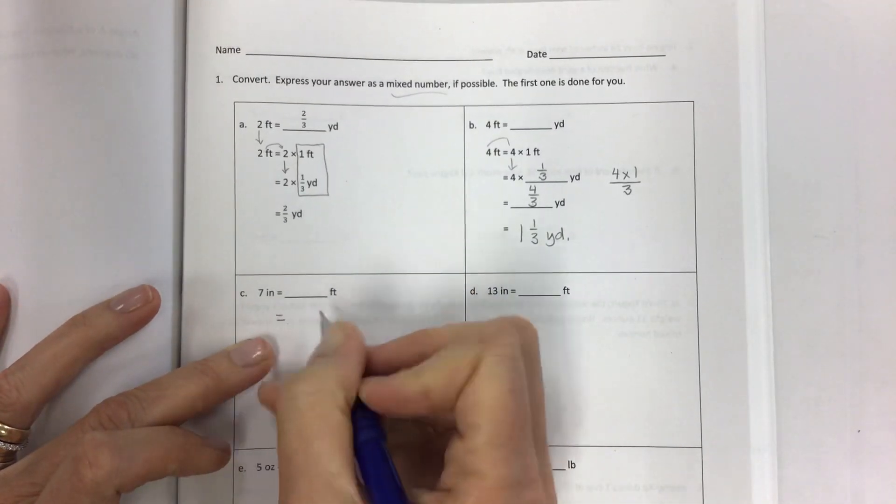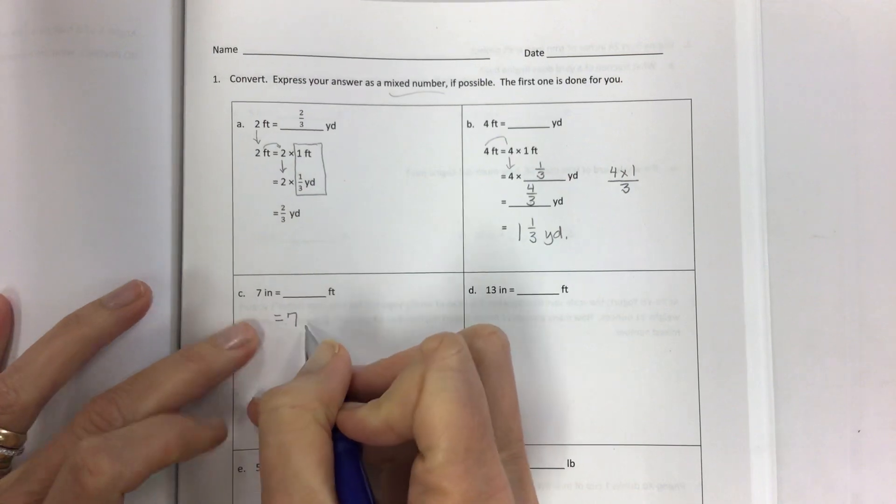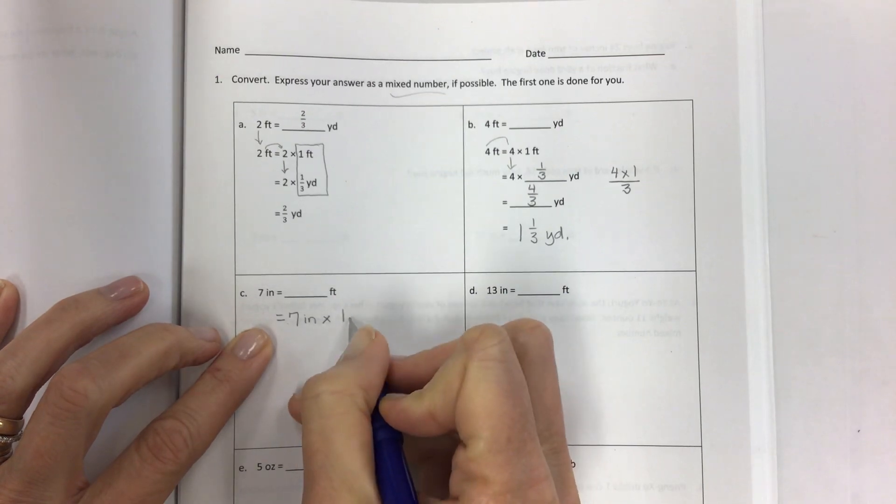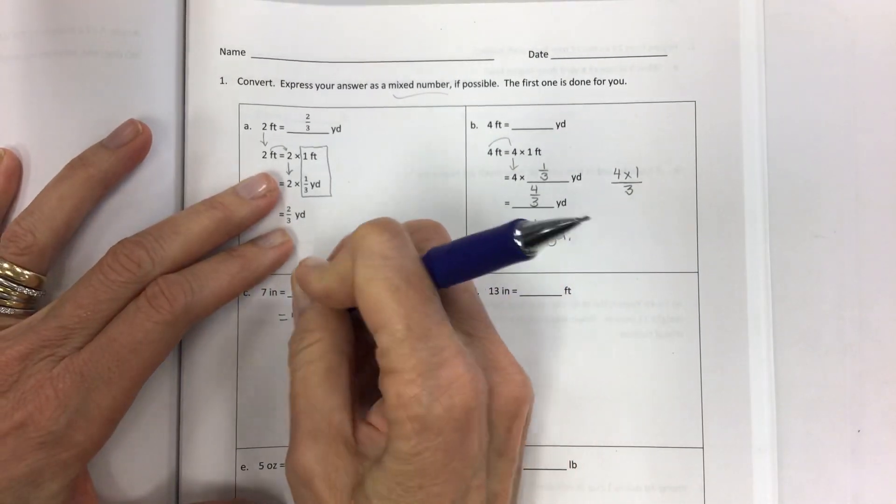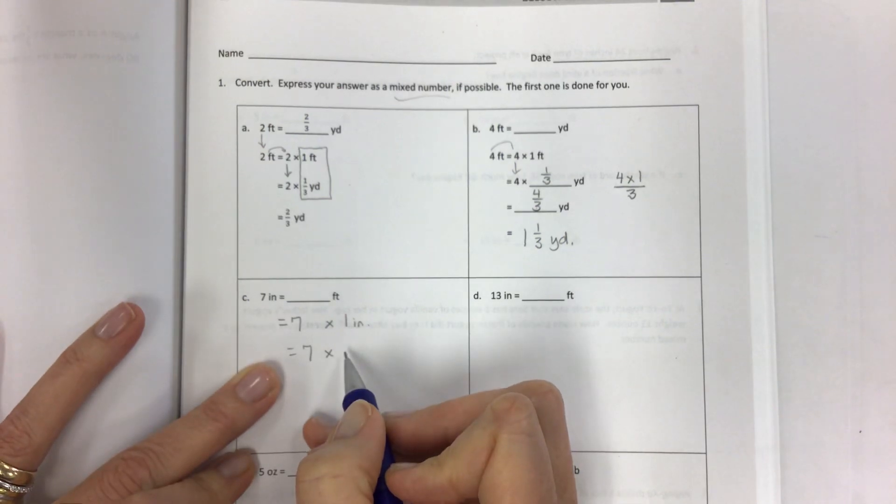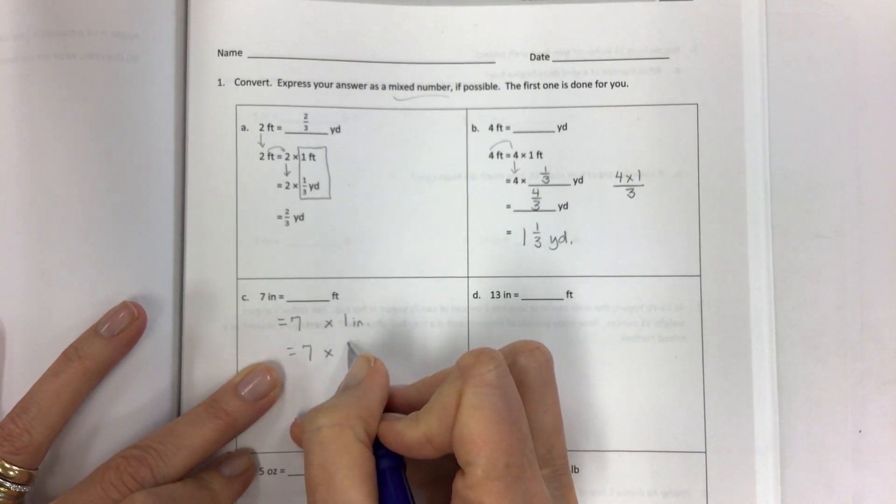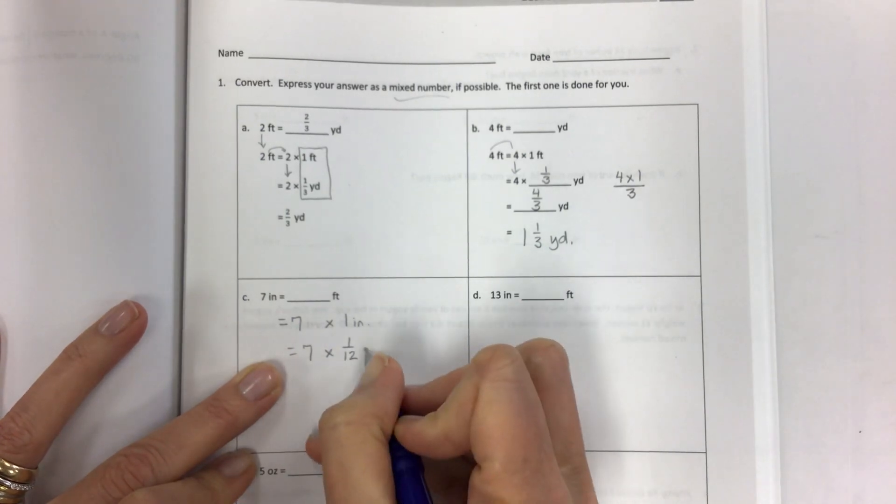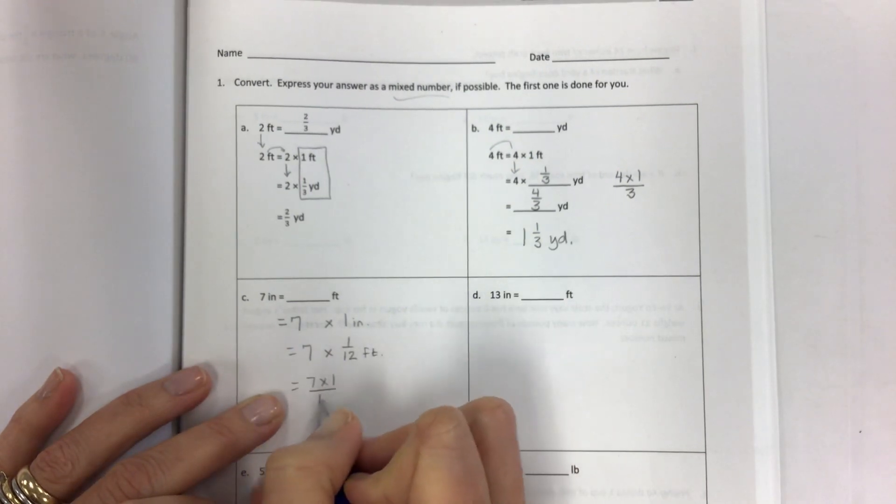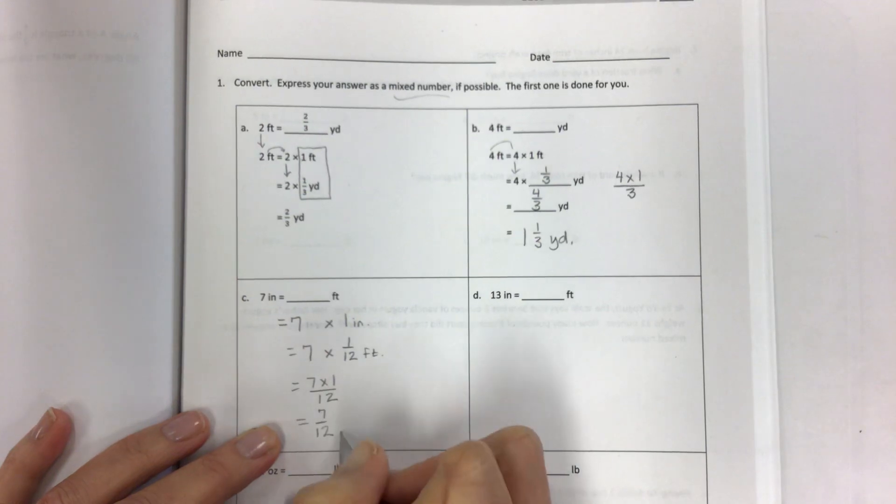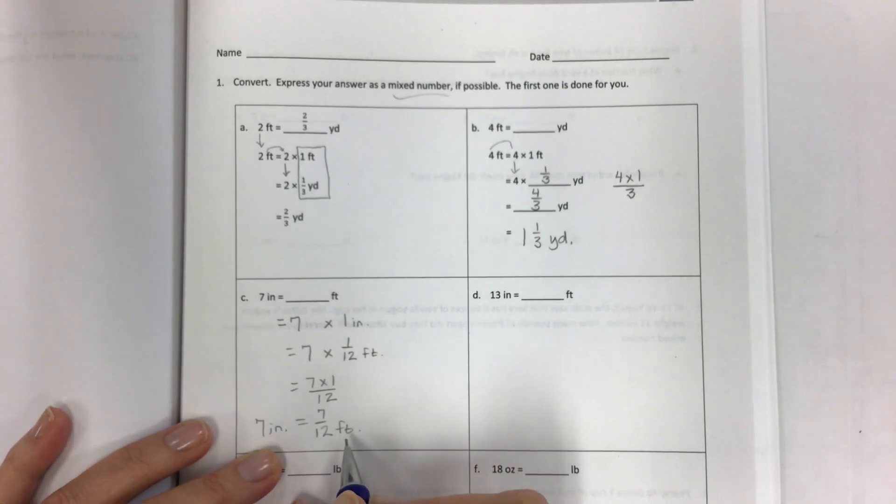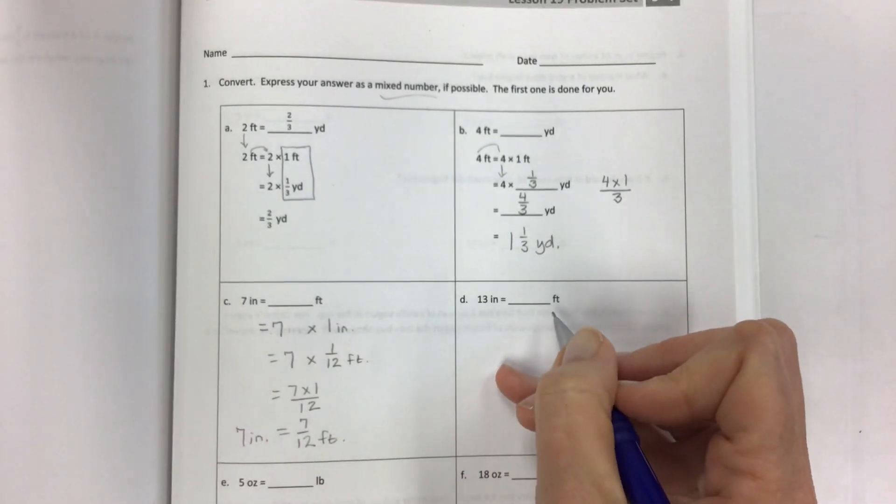Seven inches equals how many feet? Seven inches equals seven times one inch. And now it's the equivalent. So one inch is one twelfth of a foot. And that's our equivalent amount. Seven times one over twelve. Seven twelfths of a foot. Seven inches equals seven twelfths of a foot. I hope that makes sense for you.